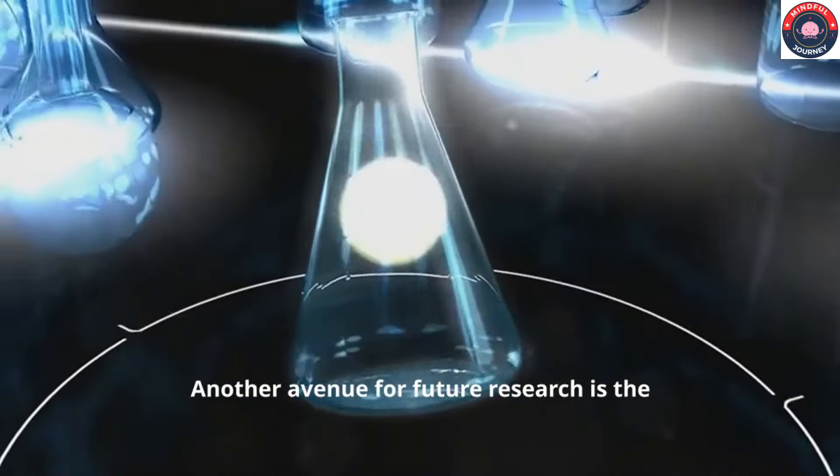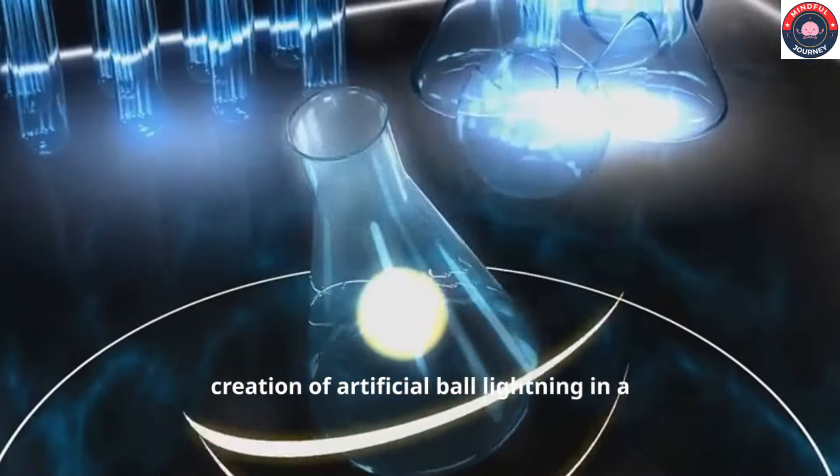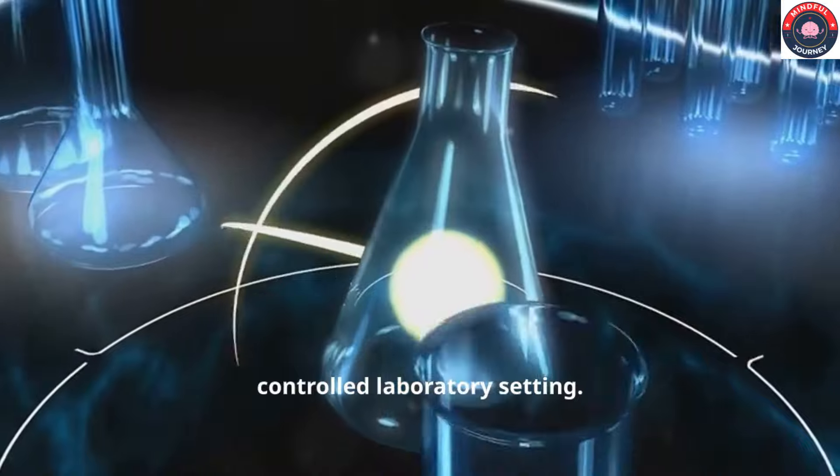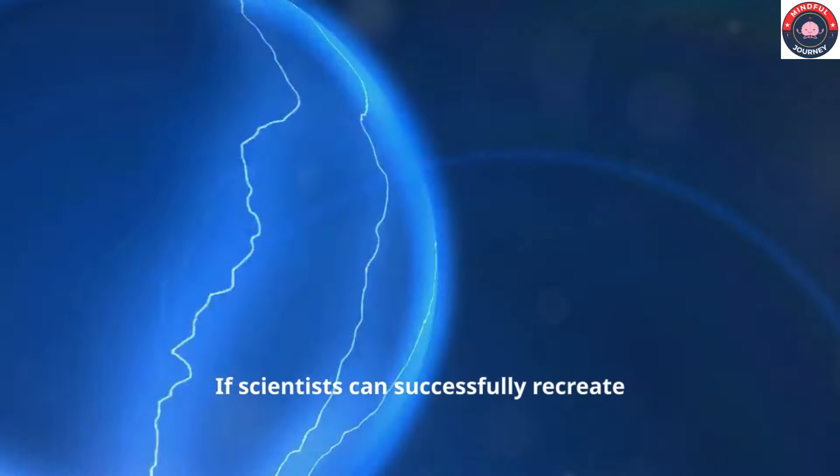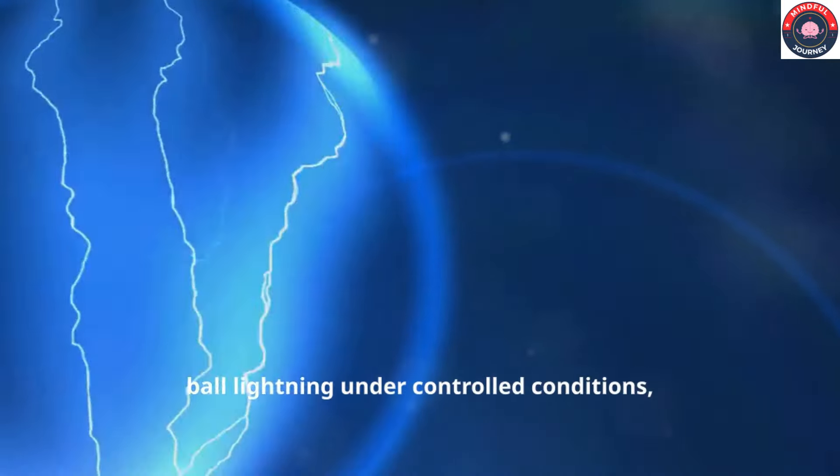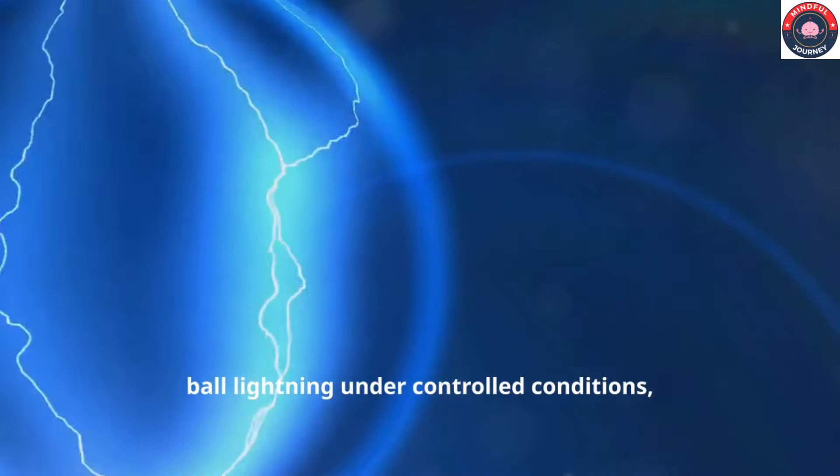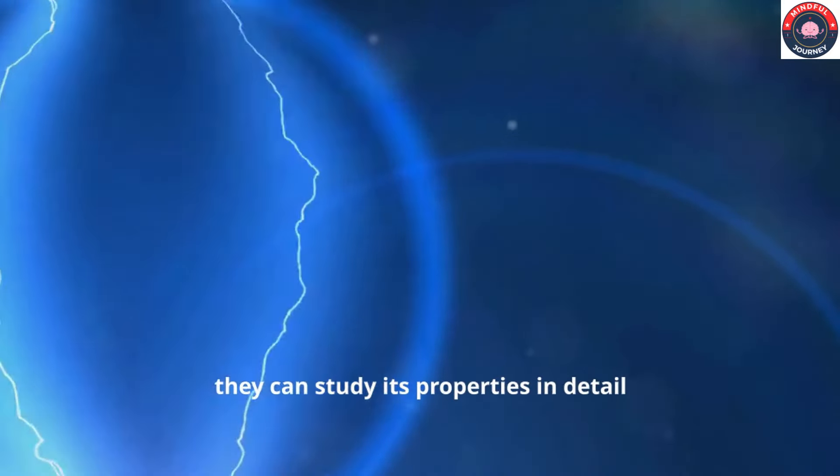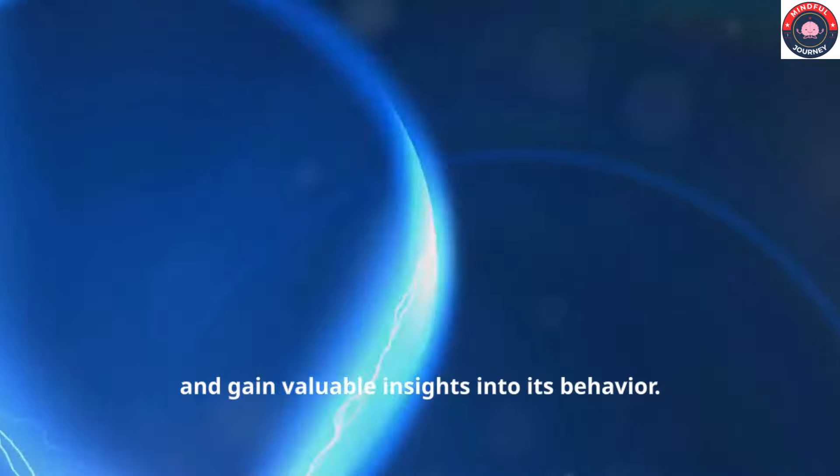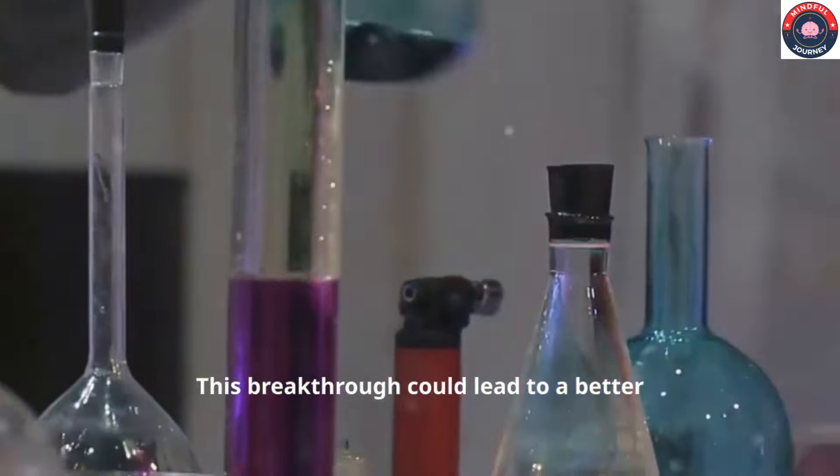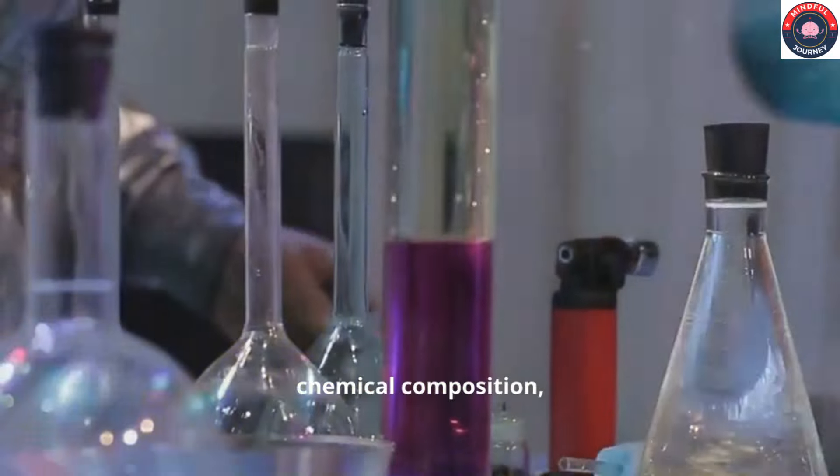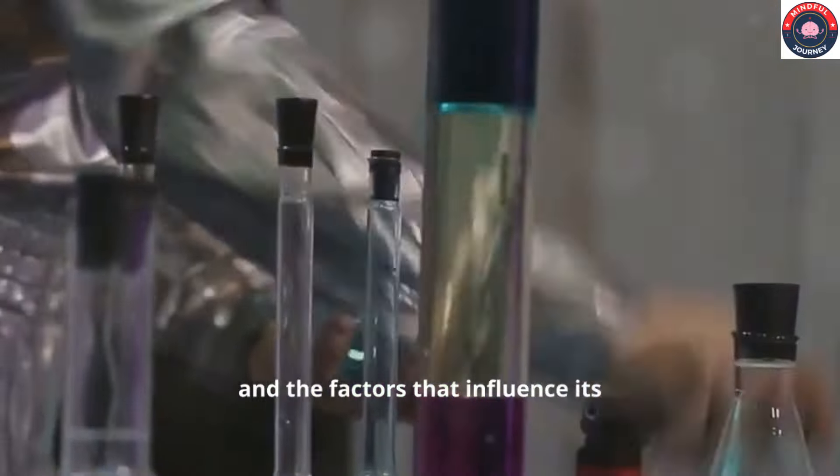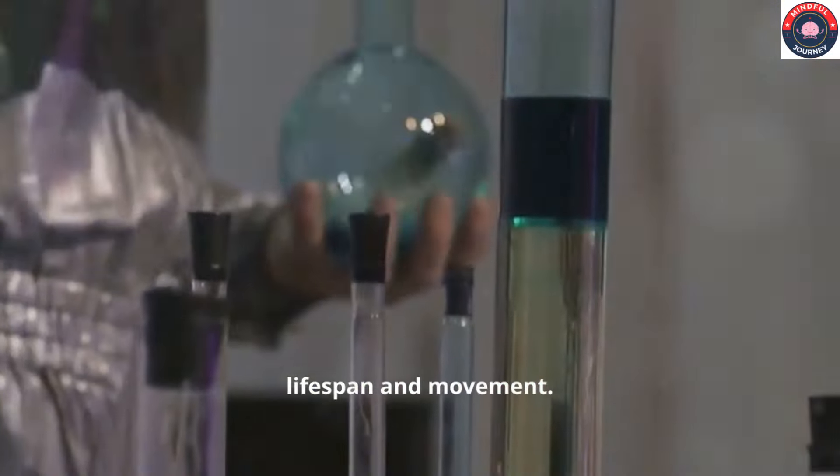Another avenue for future research is the creation of artificial ball lightning in a controlled laboratory setting. If scientists can successfully recreate ball lightning under controlled conditions, they can study its properties in detail and gain valuable insights into its behavior. This breakthrough could lead to a better understanding of its energy source, chemical composition, and the factors that influence its lifespan and movement.